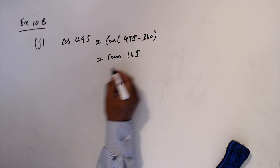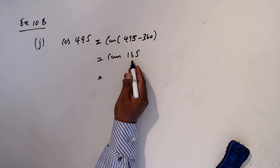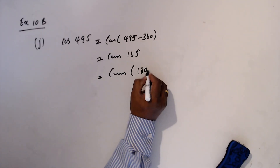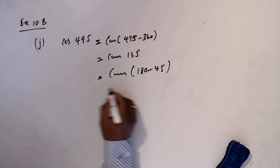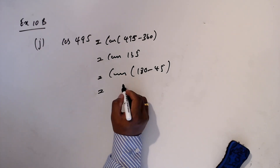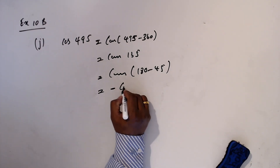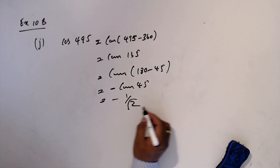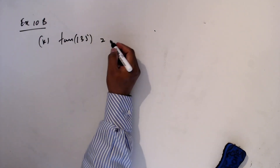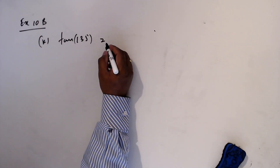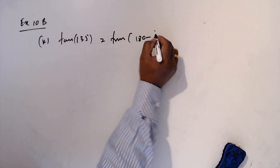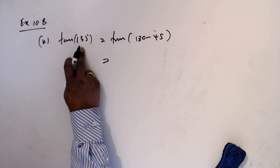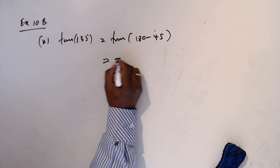J: cos 495. Since 495 is more than 360, we subtract: 495 minus 360 equals cos 135, which is in the second quadrant. Writing as cos(180 minus 45), second quadrant cos is negative, so the answer is minus cos 45, which is minus 1 over square root 2.